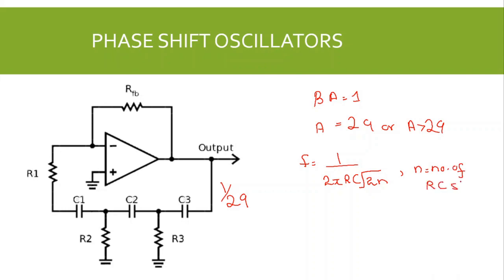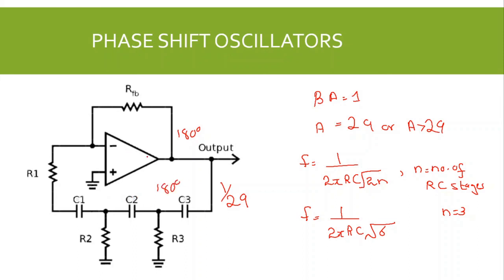With n equal to 3 RC stages, the particular frequency at which the loop gain is 1 and the overall phase shift is 0 is f = 1 / (2πRC√6). In summary, the amplifier provides a phase shift of 180 degrees and the feedback circuit also provides a phase shift of 180 degrees, giving an overall phase shift of 360 degrees. The feedback circuit and amplifier gain are adjusted so that the magnitude of the loop gain equals 1.